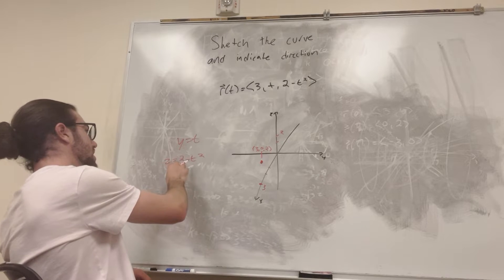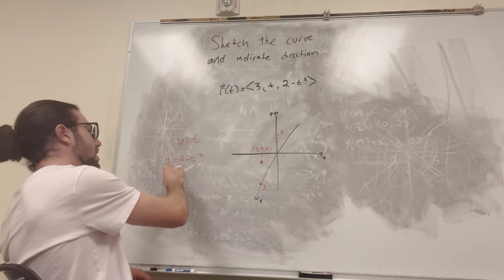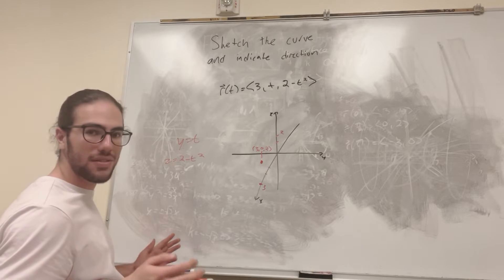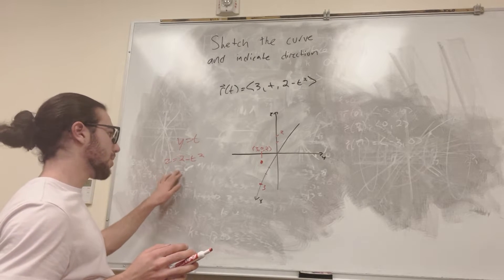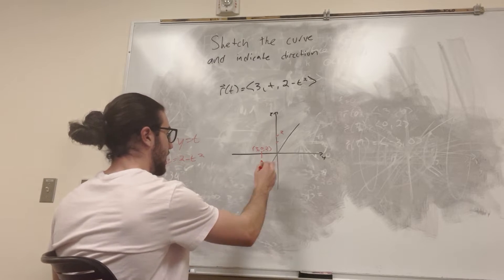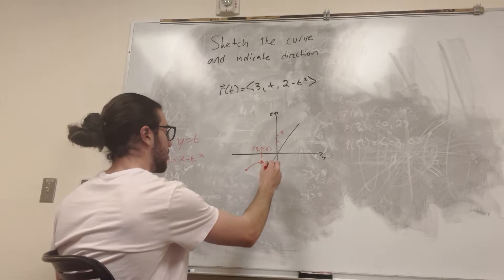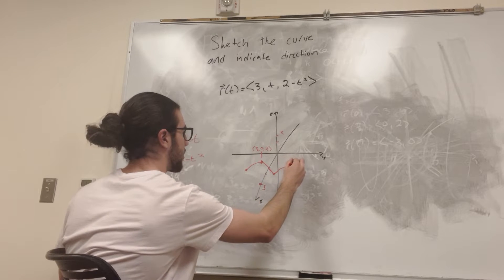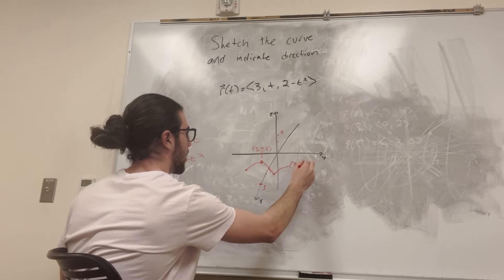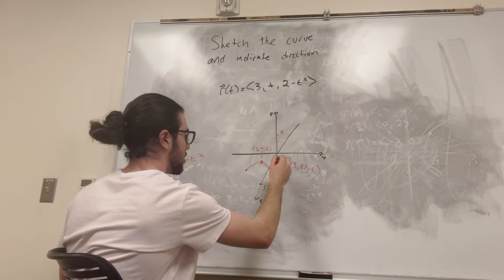But z is going to be at the same point, so if t is equal to positive or negative 1, z is going to be equal to 1. So it's going to look like this, basically. These points are basically, this is either (3, ±1, 1). It's these two points.